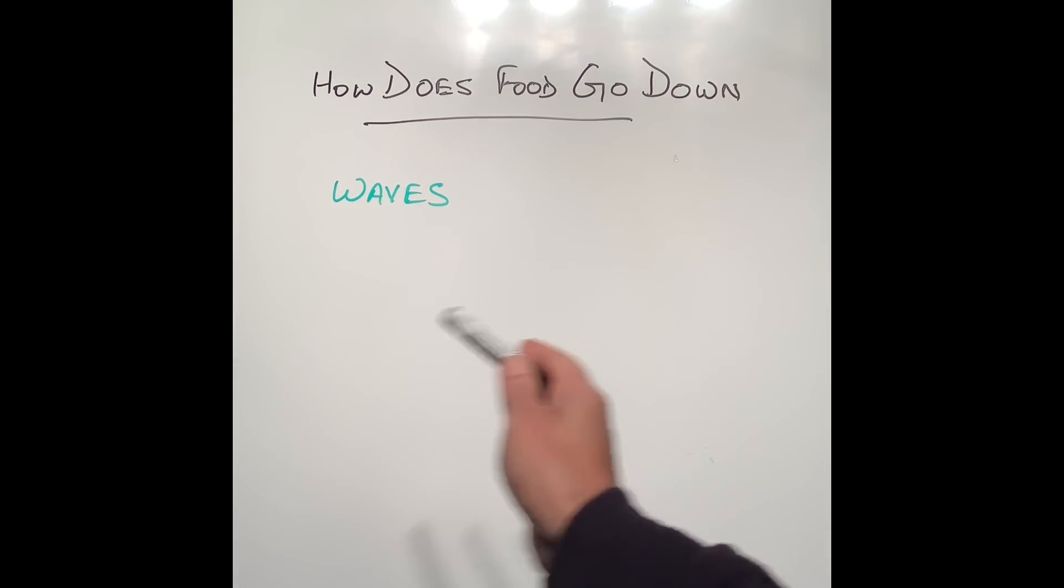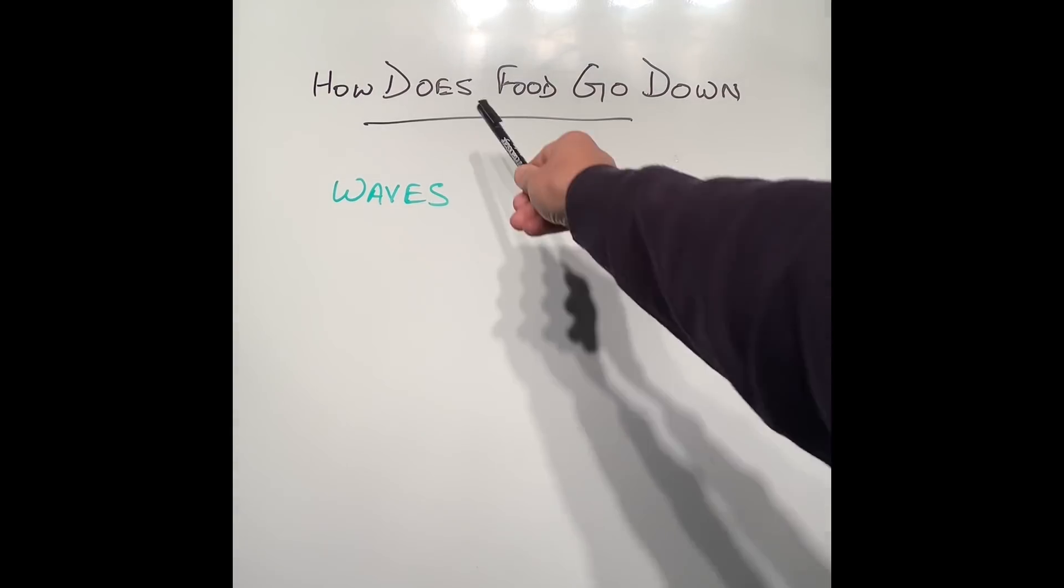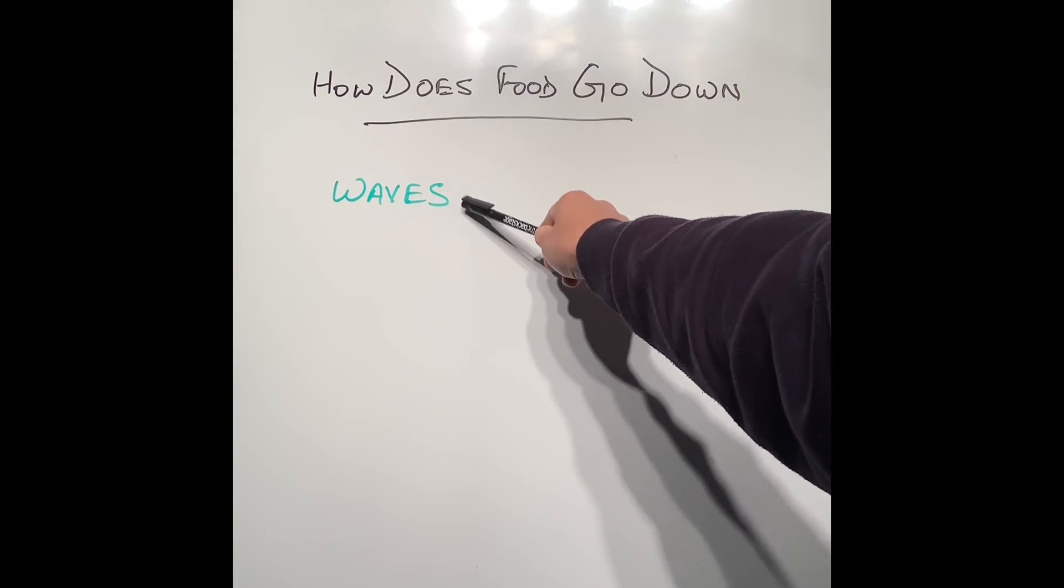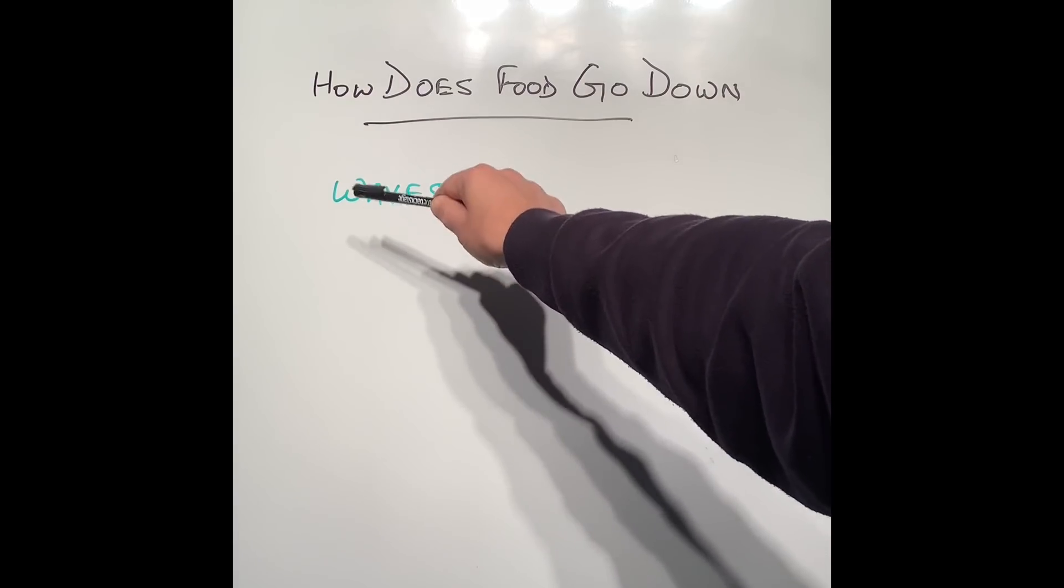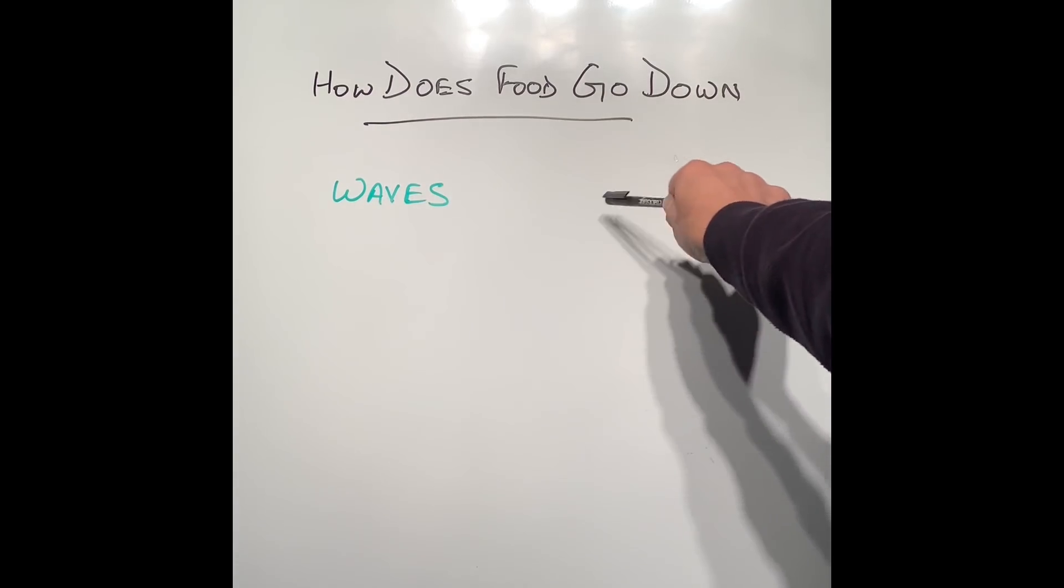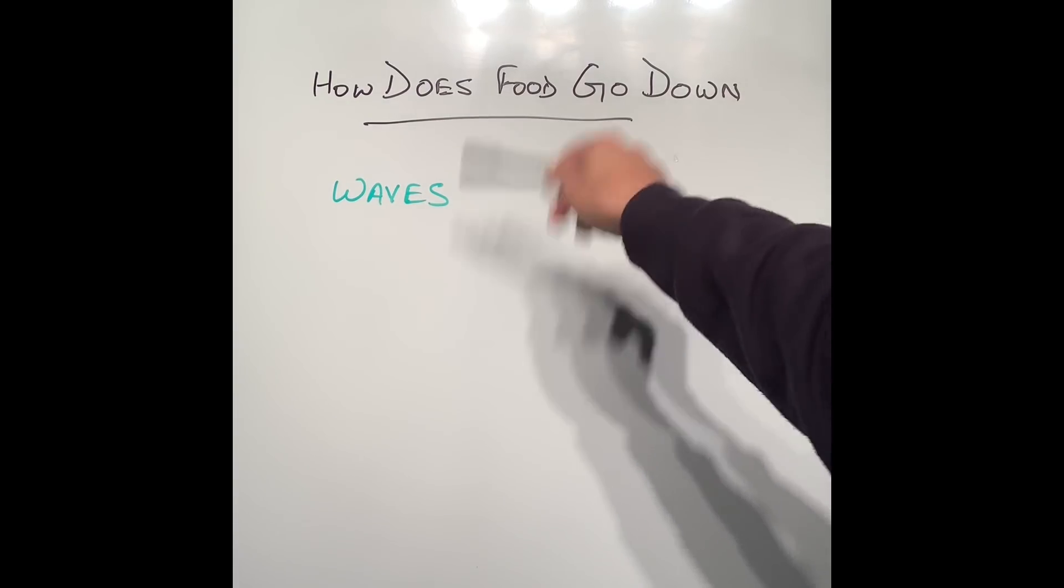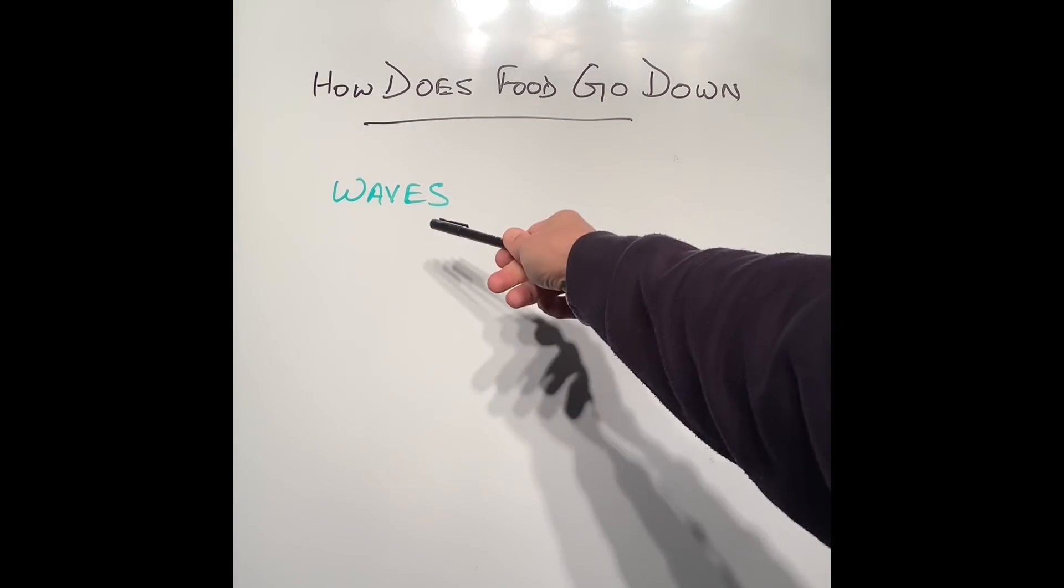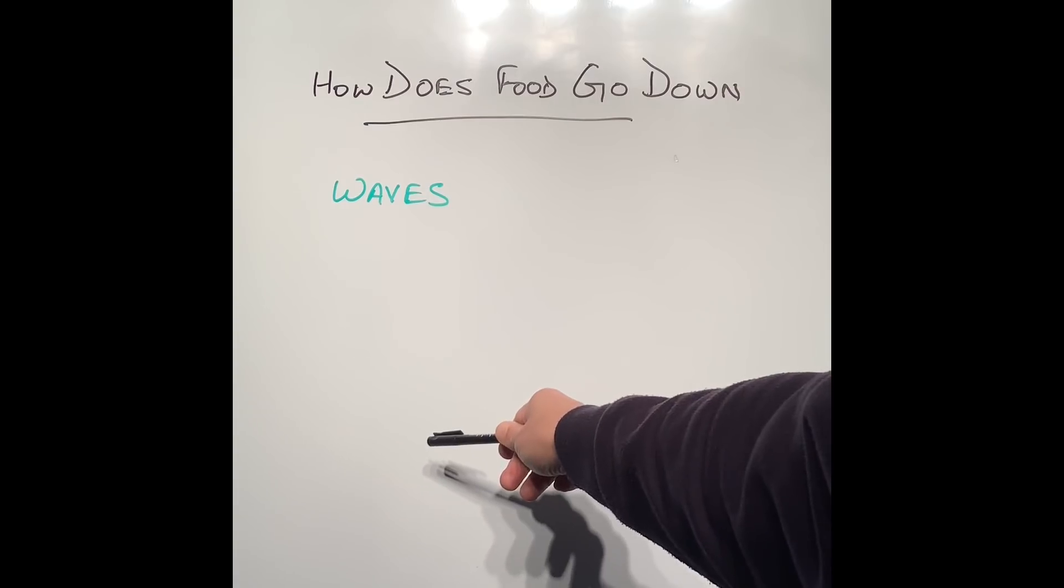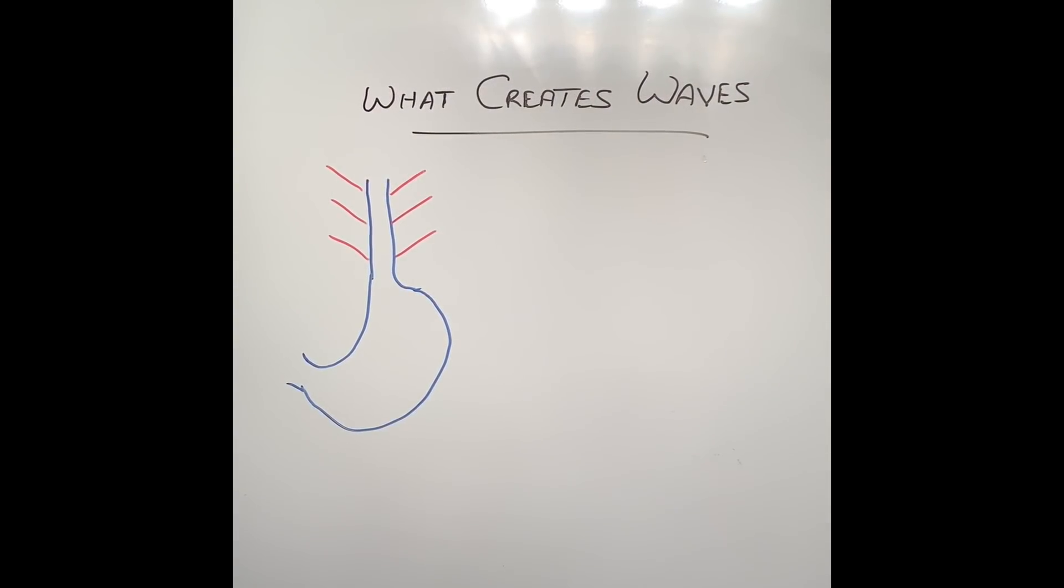The same thing happens when we eat food and it goes to the back of our throat. The throat and esophagus produce little waves. Those waves are called peristalsis, and they push the food down from our mouth, from the back of our throat, into the stomach. So what creates these waves that push the food down?